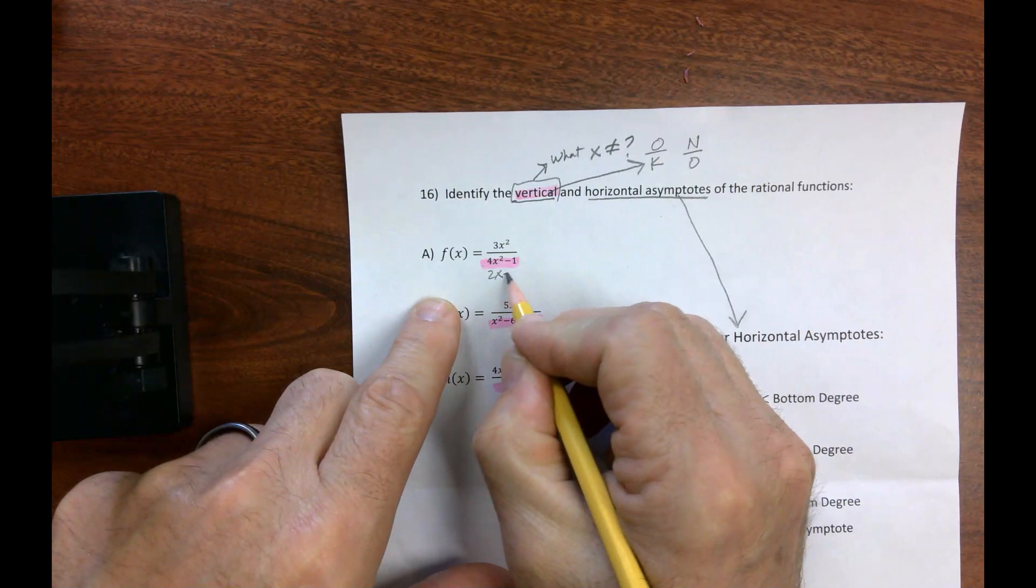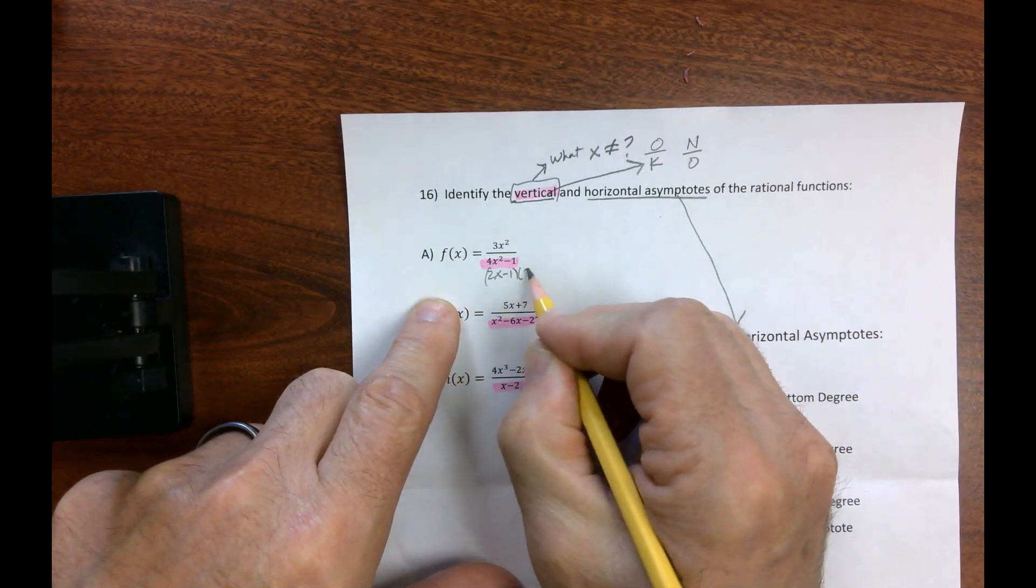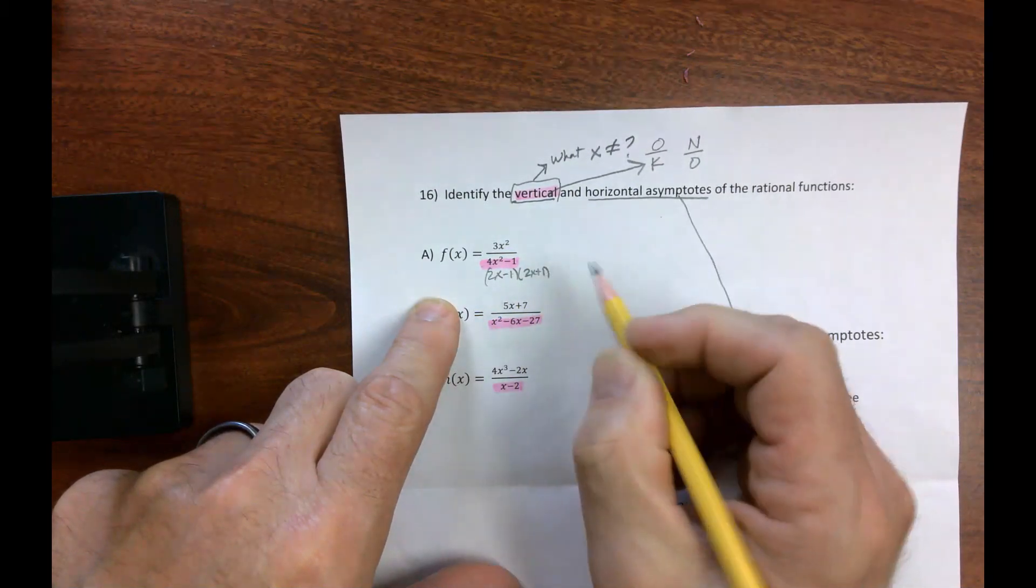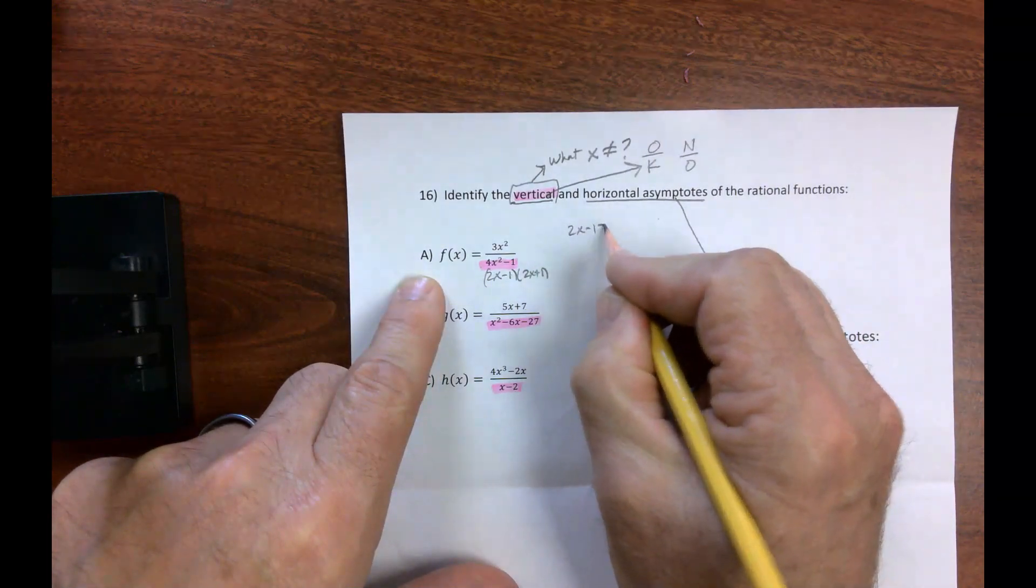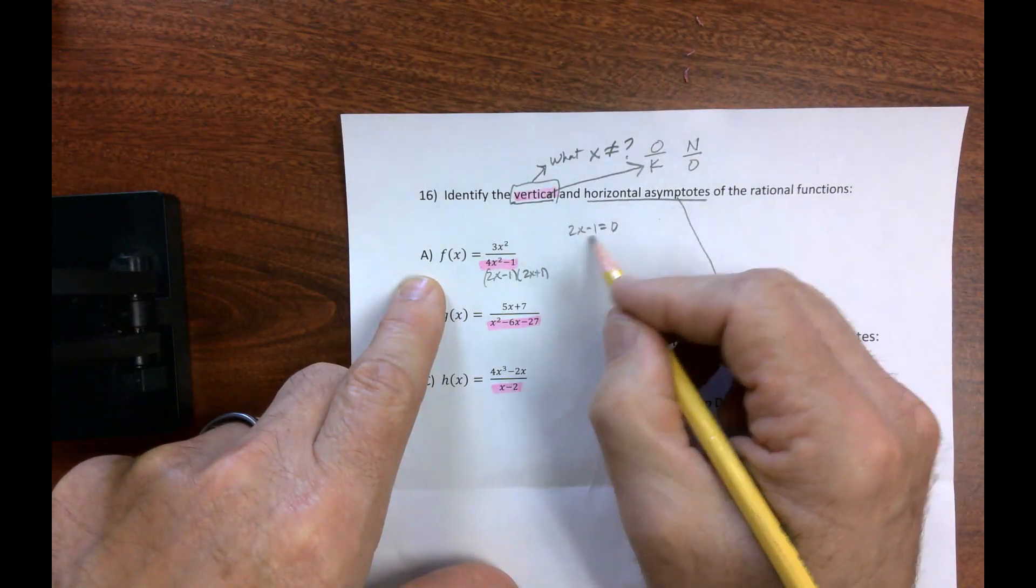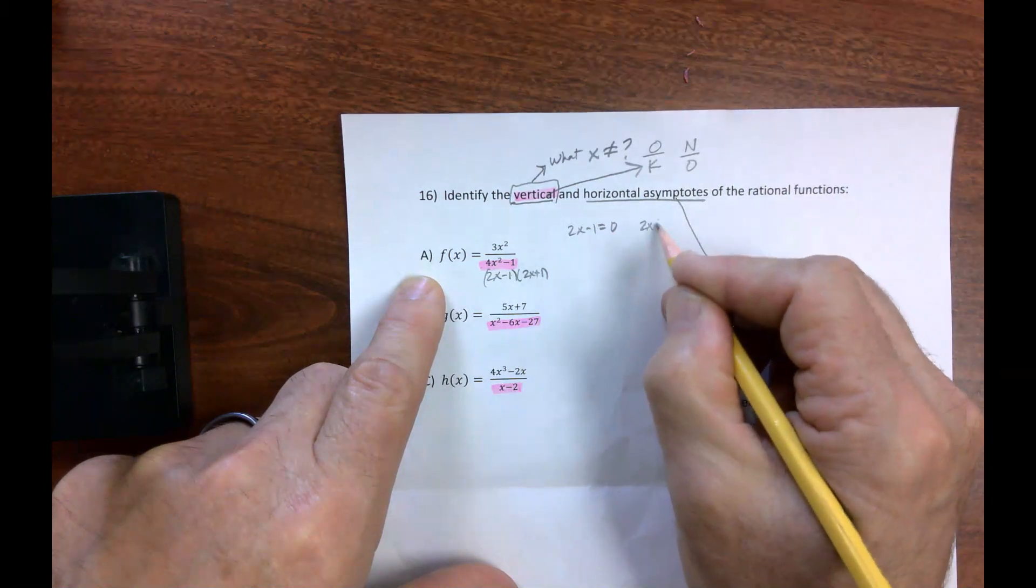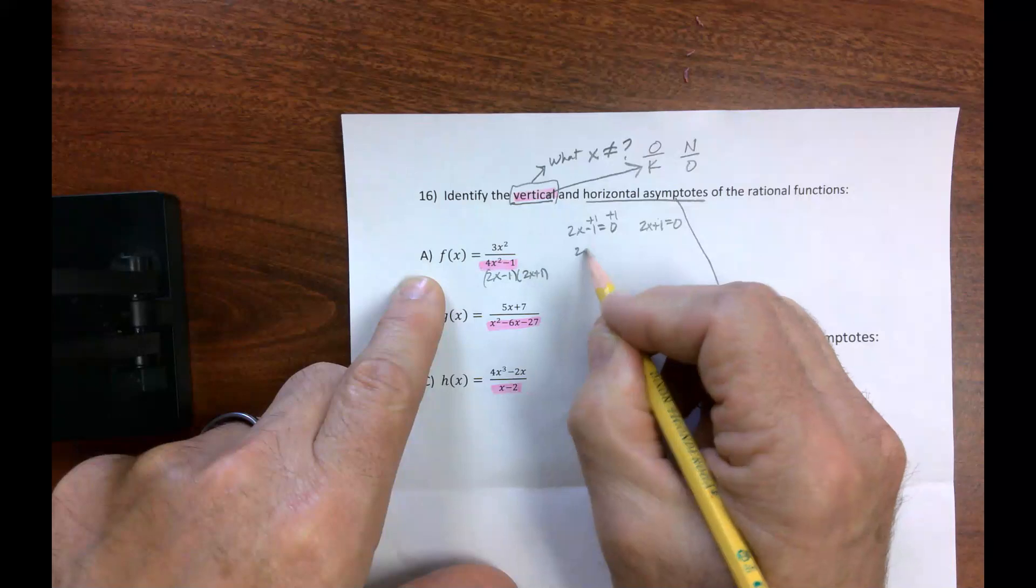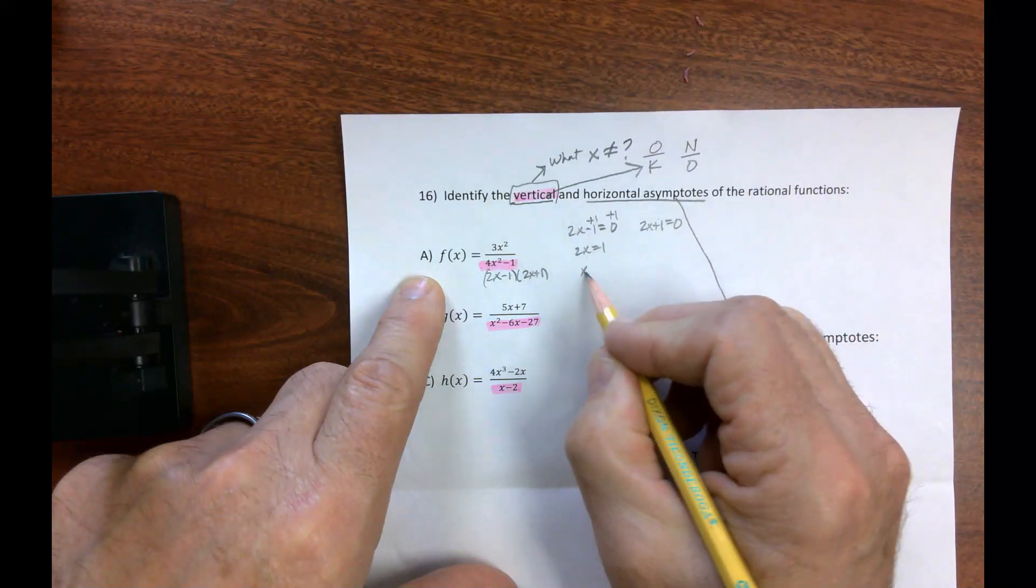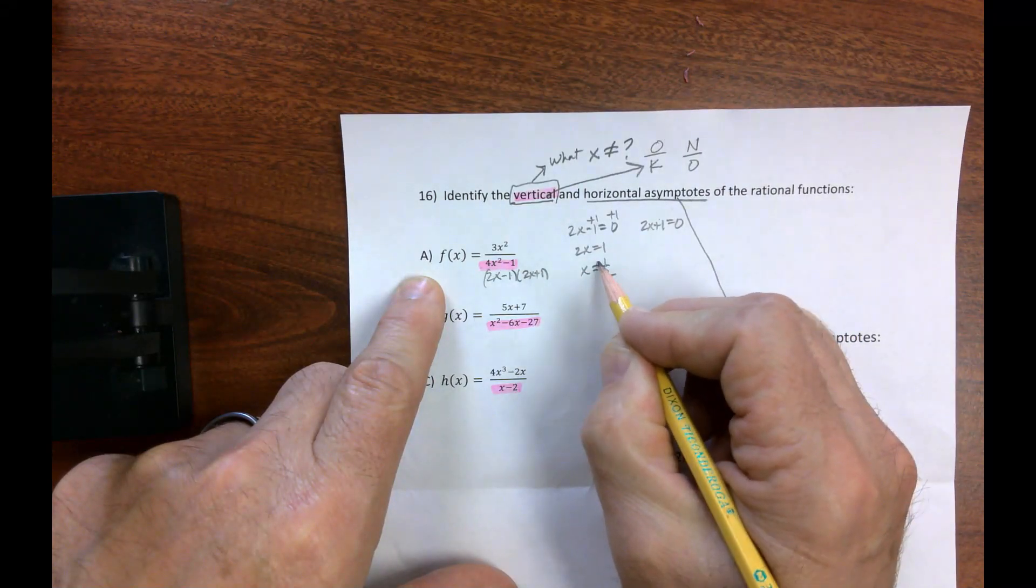So this is 2x minus 1, 2x plus 1, because that's the difference of two squares. Now if I set each one of these equal to zero, 2x minus 1 equals zero, and 2x plus 1 equals zero, and solve it. Add 1, add 1, I get 2x is 1, divided by 2, I get x is a half, but that's what x can't be.